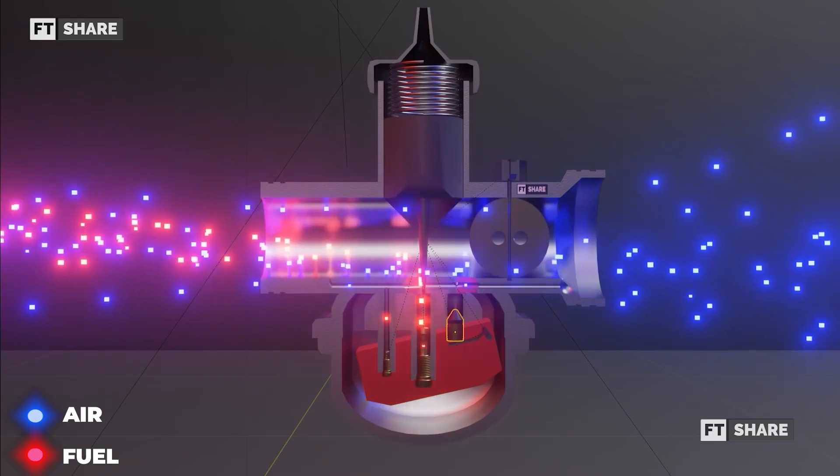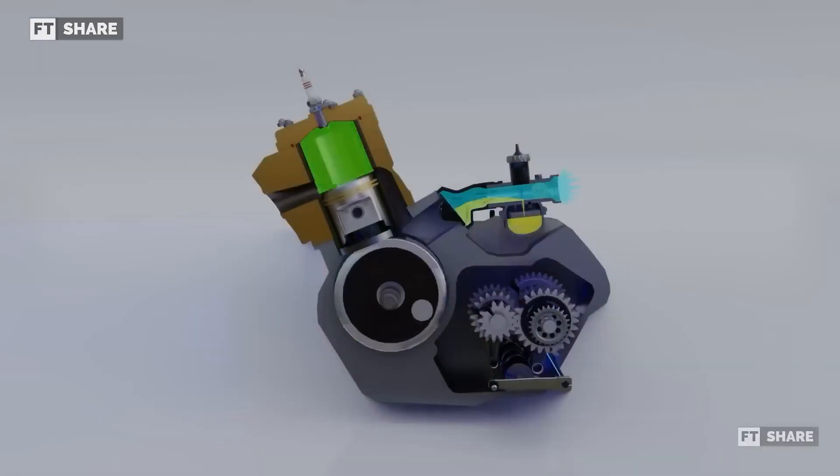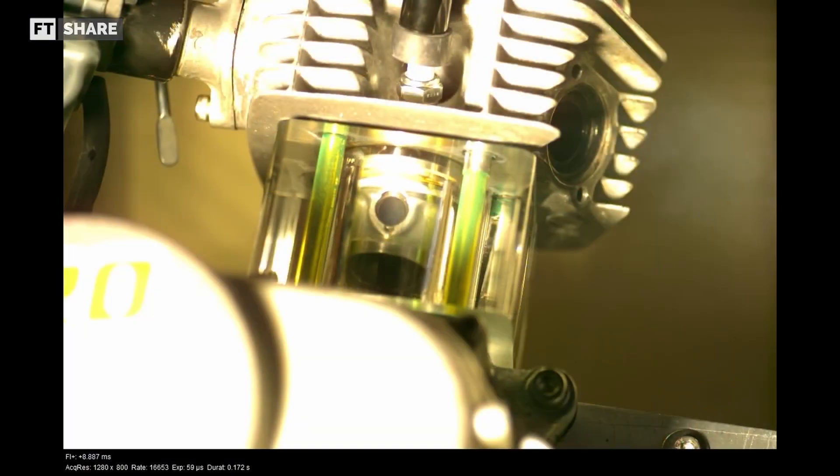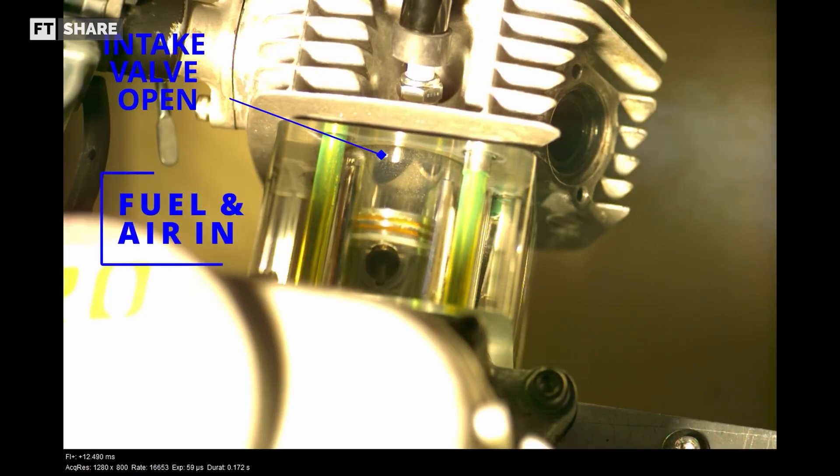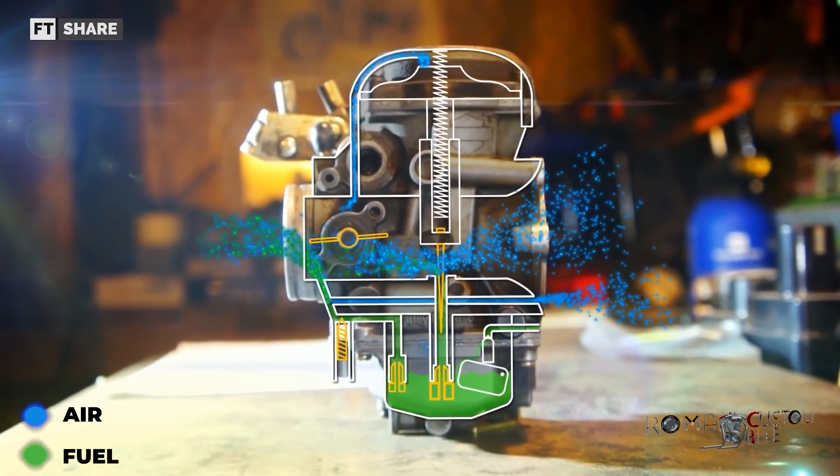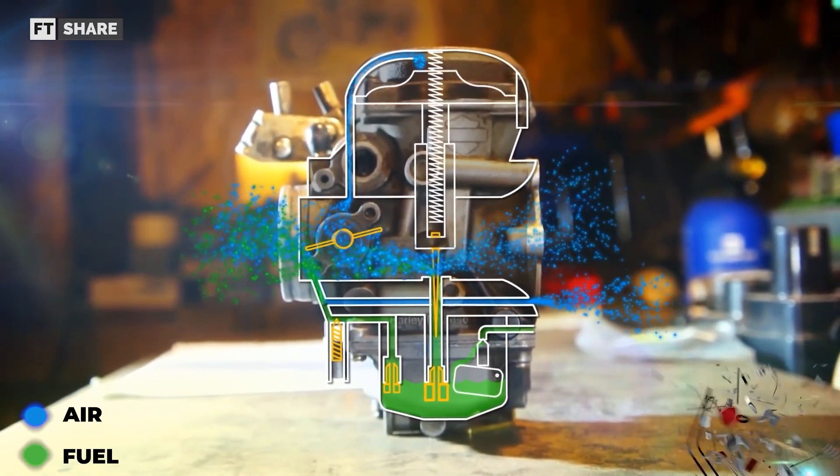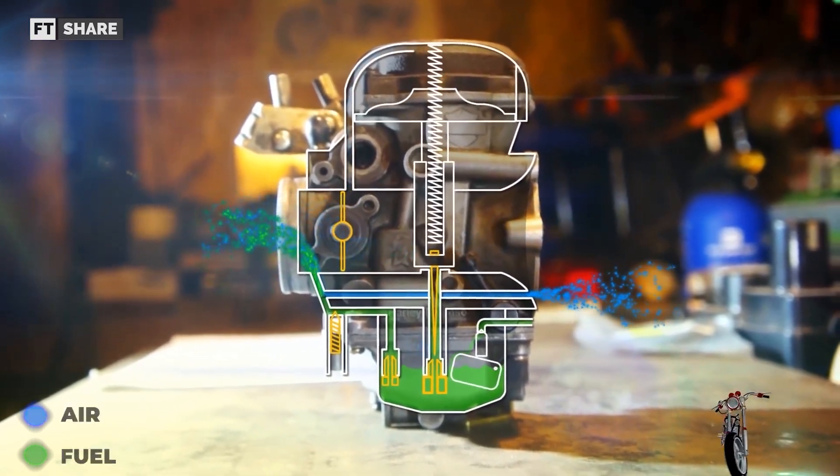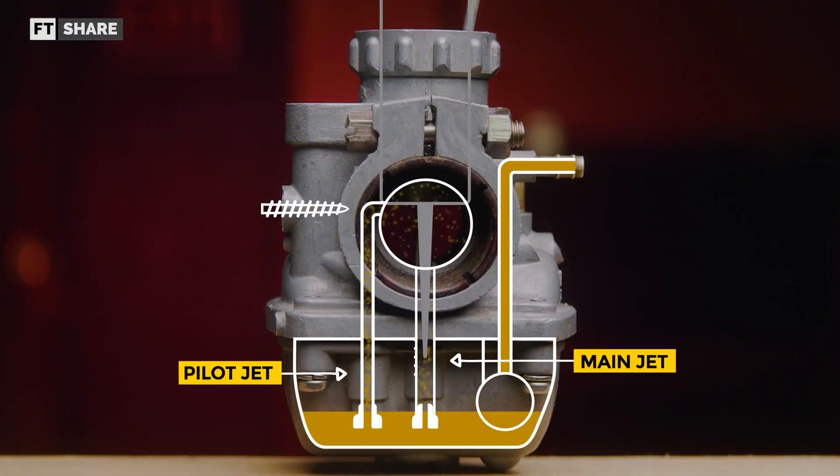This tool has a working mechanism that is highly dependent on the engine capacity and engine speed. Because as we know that when the intake step occurs, there will be a negative pressure that produces suction power. Now with this low pressure or vacuum causes the movement of gasoline and air through the main jet when venturi is open.